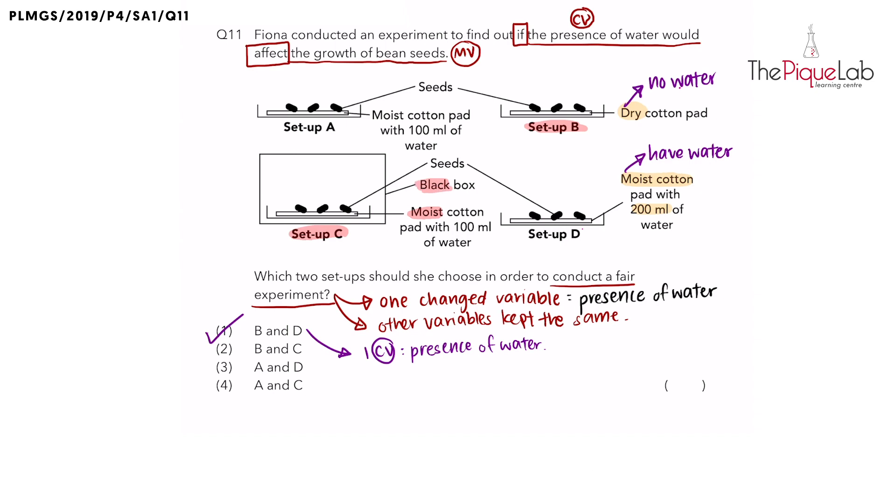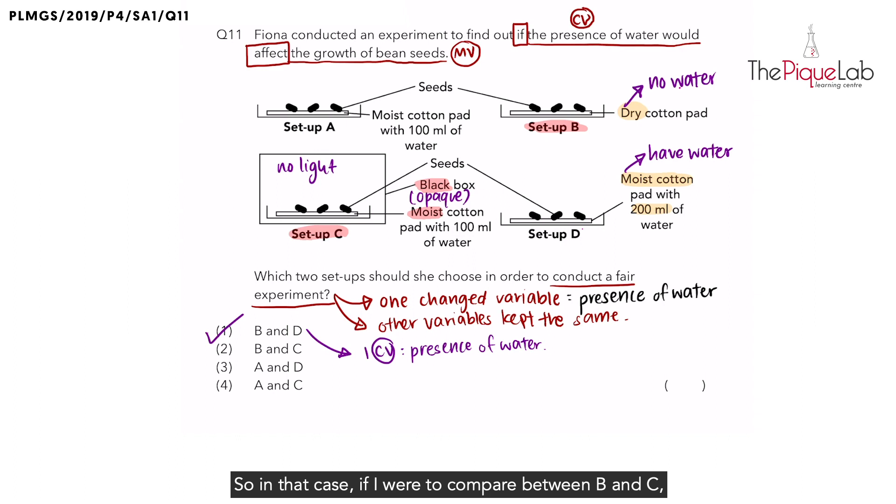And a black box is actually opaque. Students know that a black box means that it's going to be very dark inside because it will not allow any light to pass through. So for C, there is no light. So in that case, if I were to compare between B and C, you notice that number one, I change the presence of water. Number two, I change the presence of light because B has light, C has no light.